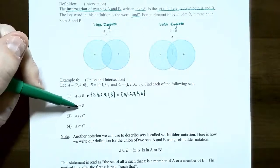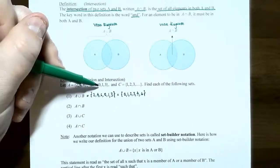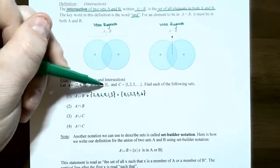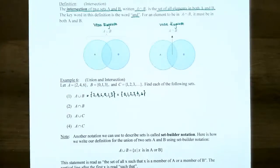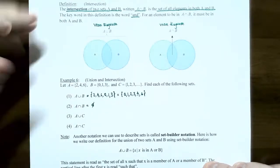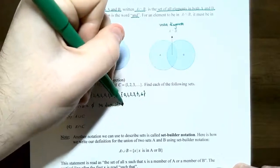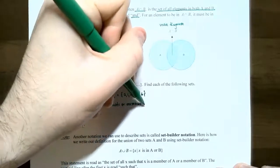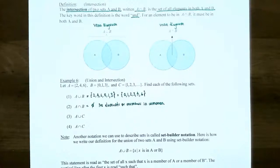Number two: A intersect B. This means what do A and B have in common? A has 2, but B doesn't. 4 is not in common, 6 is not in common, 0 is not in common, 1 is not, and 3 is not. So A and B have nothing in common. The answer is the empty set — the circle with a slash through it — meaning no elements or members are in common. Even though there's nothing in common, the answer is still a set: the empty set.